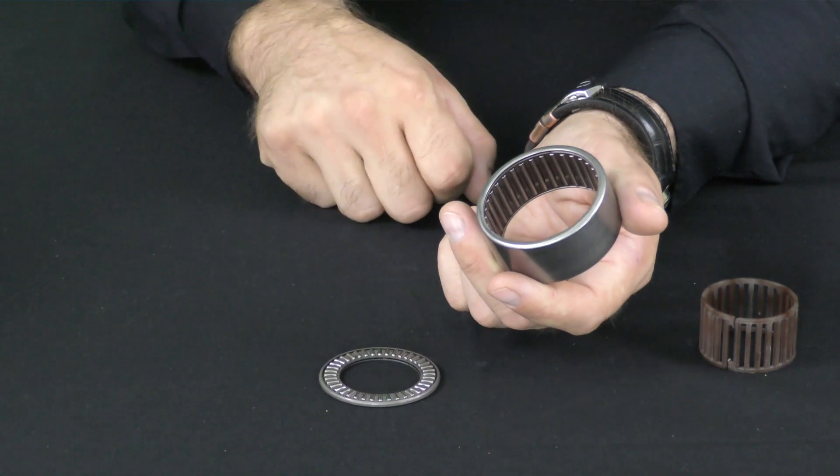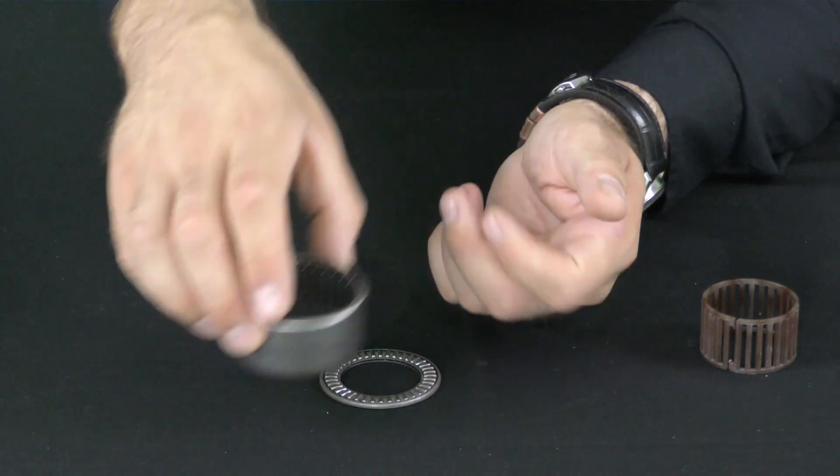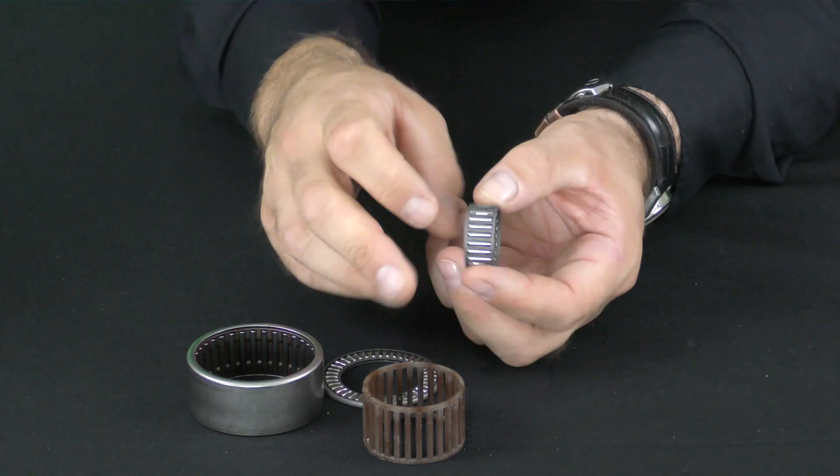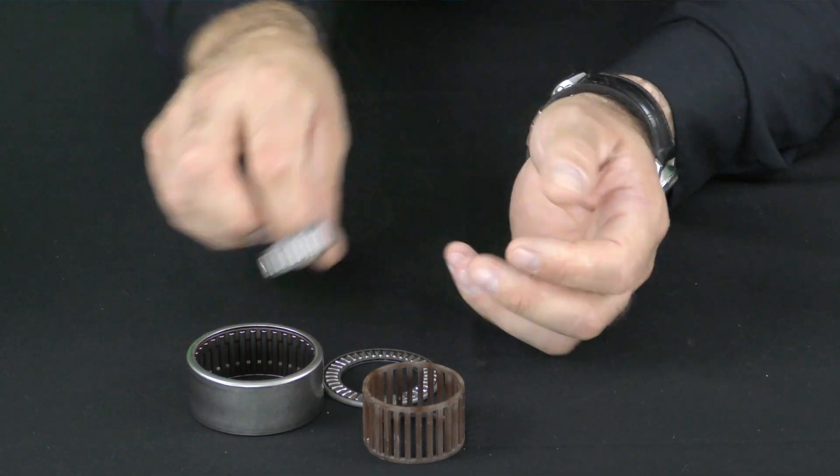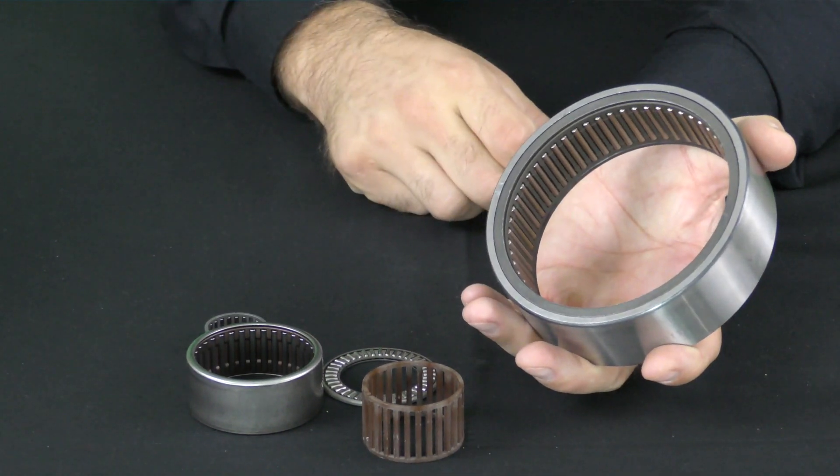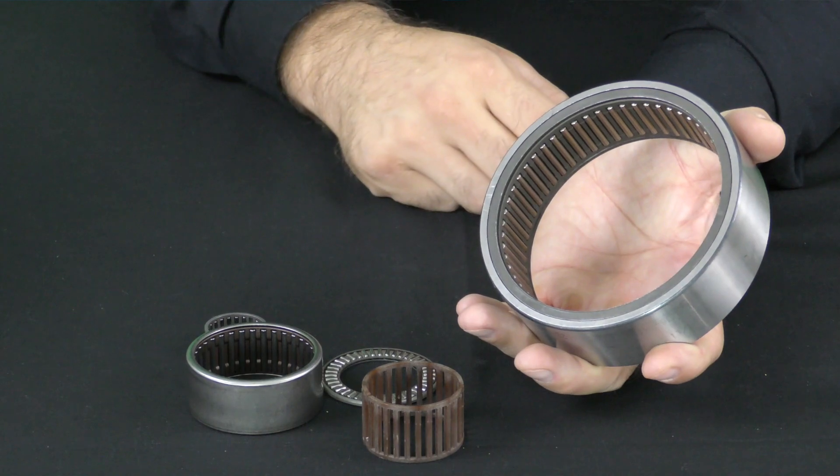We can have axial types. We can have this cage-guided type. We can have a split cage type. We can have a needle roller without any outer. We can even have this large type here which has a steel cage and a machine cut outer.